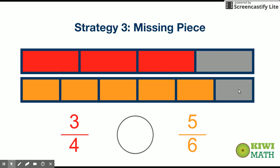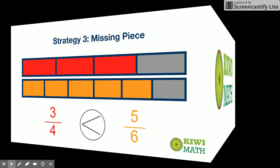Five-sixths is missing a smaller piece than three-fourths. If it's missing a smaller piece, that means it needs less to get to a whole, and three-fourths needs more to get to a whole. So in this case, the greater fraction is five-sixths. The greater fraction is the fraction that's missing a smaller piece. I hope this was helpful — thanks for watching.